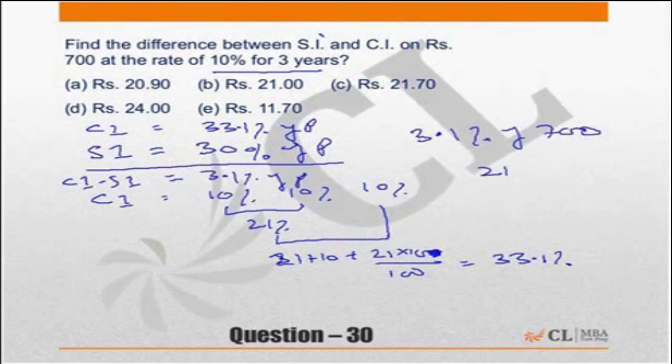So 3% is 21, that means 3.1%. So 3% is equal to 21, because 10% of 700 will be 70, 1% of 700 will be 7. Again 1% is 7, 0.1% is 0.7. So, 3.1% will be equal to 21.7.